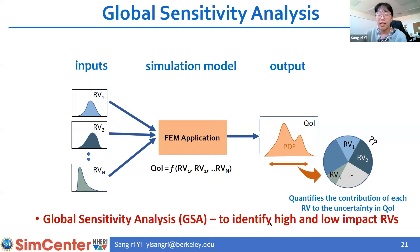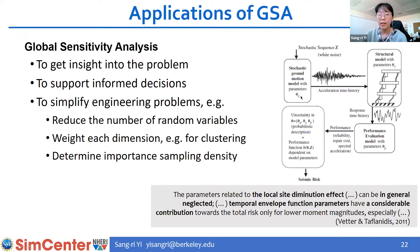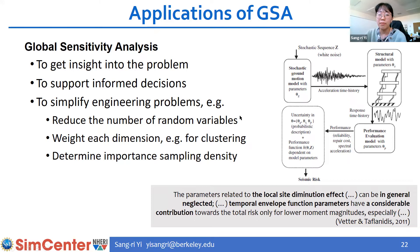Global sensitivity identifies which random variables are most responsible for the uncertainty in QoI, identifying high and low impact random variables. Why is it useful? First, it can give us insights into the problem. I wanted to refer to a paper by Vetter and Taflanidis, who applied sensitivity analysis to an earthquake engineering problem. Based on that, they were able to get insights such as some parameters can generally be neglected, while others have considerable contributions to total risk under certain conditions. This can also be used to simplify engineering problems by removing random variables with low sensitivity values to gain computational efficiency.